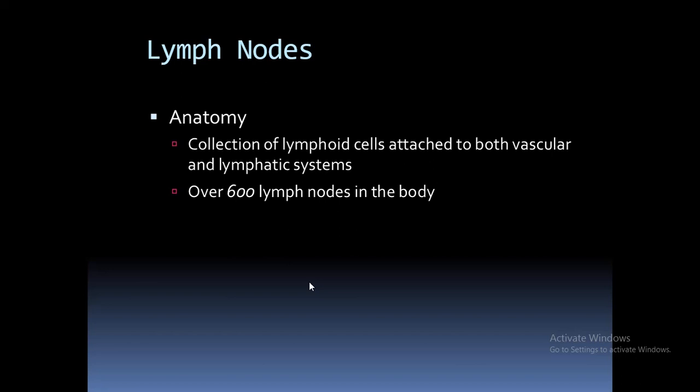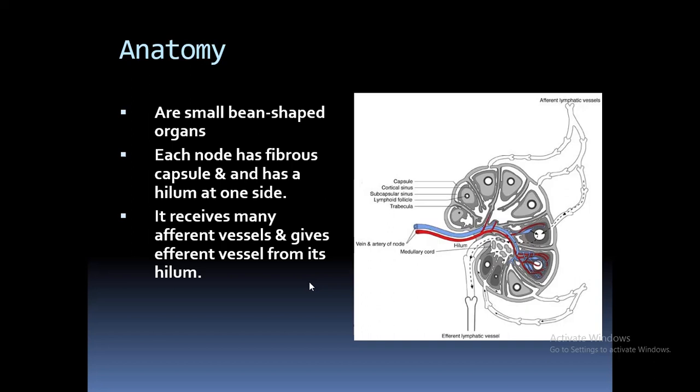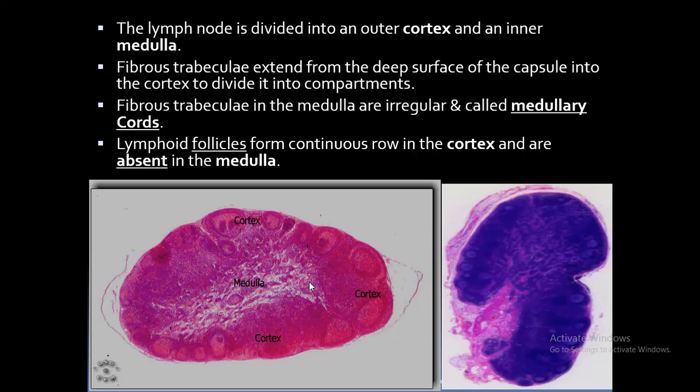What is a lymph node? It is a collection of lymphoid cells attached to both vascular and lymphatic systems. There are over 600 lymph nodes in our body. It is a bean-shaped organ; each node has a fibrous capsule and a hilum at one side. It receives many afferent vessels and gives efferent vessels from its hilum. Histopathologically, the lymph node is divided into outer cortex and inner medulla. Fibrous trabeculae extend from the deep surface of the capsule into the cortex to divide it into various compartments. Fibrous trabeculae in the medulla are irregular and called medullary cords. Always remember that lymphoid follicles form a continuous row in the cortex and are absent in the medulla.